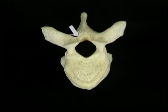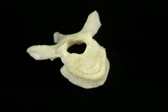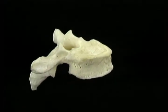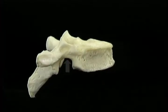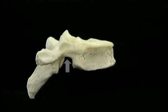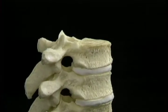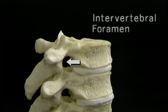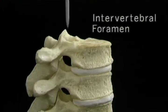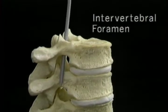This part of the neural arch is called the lamina. This part is the pedicle. There's a small notch in the upper edge of the pedicle and a larger notch in the lower edge. Together, the notches above and below form an opening on each side called the intervertebral foramen. A spinal nerve emerges through each intervertebral foramen.